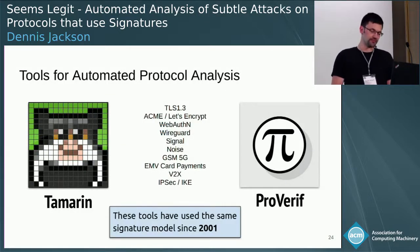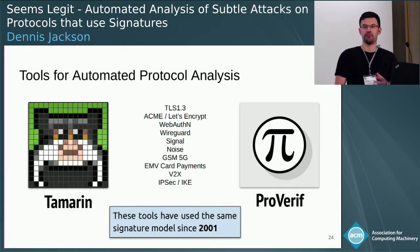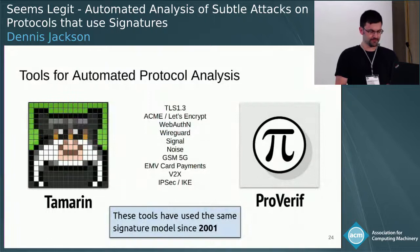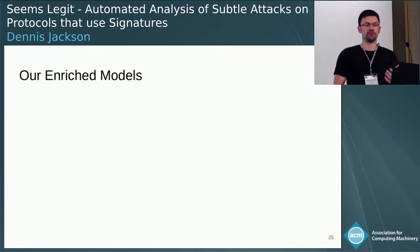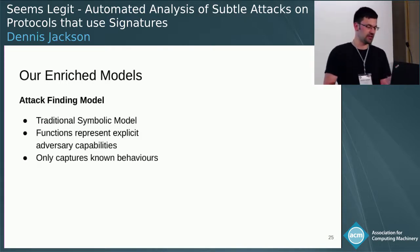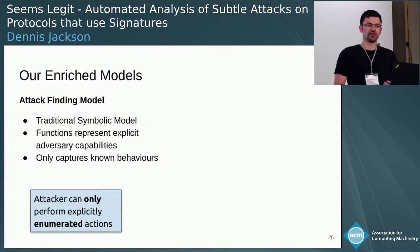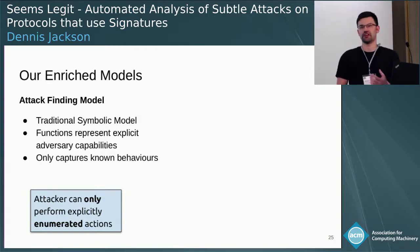The important point for us is that these tools have not changed their signature model since 2001. They use an approximation that goes back to the very first ProVerif paper, and Tamarin and all the other tools have inherited it from that paper without reconsidering it. And 2001, as you might remember, is about when a lot of these behaviours were being discovered. So what we did was improve these tools such that they can exploit and understand these behaviours. That gives us an attack-finding model. But it's a bit unsatisfying because it relies on us prescribing which are the possible algorithms the attacker could use. So if it comes back without finding an attack, that's not a very strong guarantee - how do we know there isn't some additional behaviour we just haven't thought of yet?